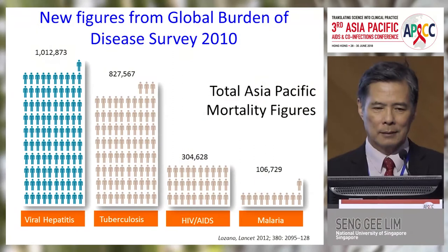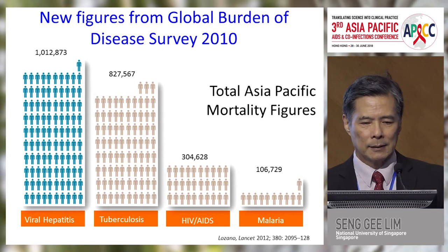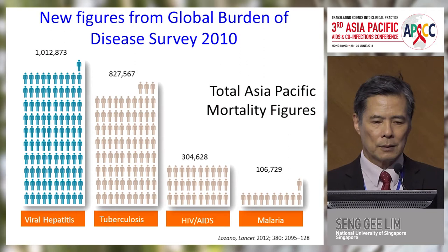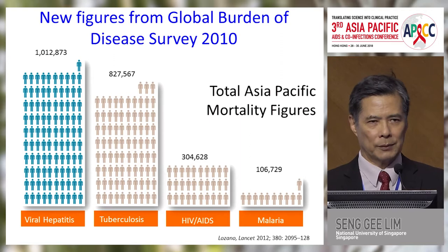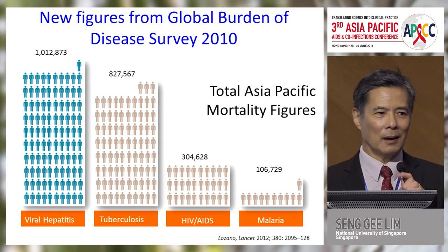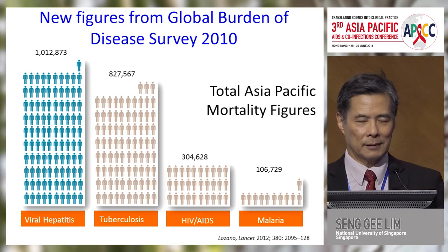One of the first things we need to realize is that hepatitis B is actually the biggest problem in terms of infectious diseases in the Asia-Pacific region. These are mortality figures from the Global Burden of Disease survey, showing more than a million deaths, 80% of which are due to hepatitis B and 20% from hepatitis C. Compared to the current issue of HIV and AIDS, it really far surpasses that.